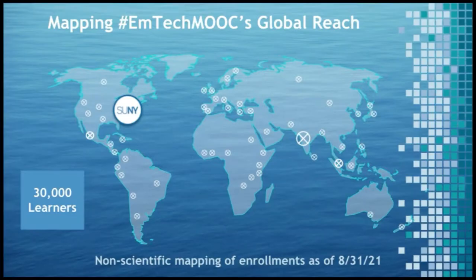In the three years that the course has existed, 30,000 learners have enrolled from 150 plus countries. On the map, there are a few countries with bigger circles than others — India and Mexico are some of the countries that very often enroll in EmTech. The biggest circle is over New York State, which represents the state where SUNY is located.